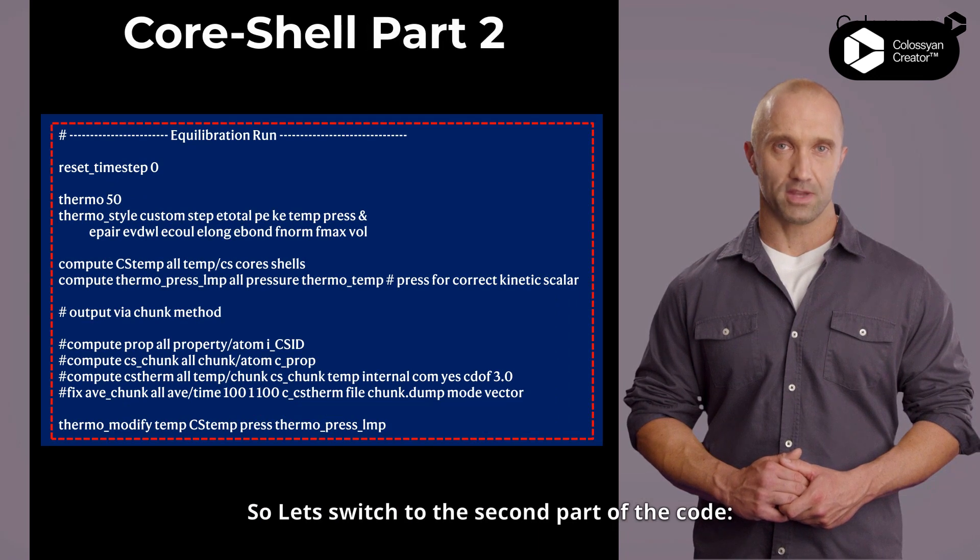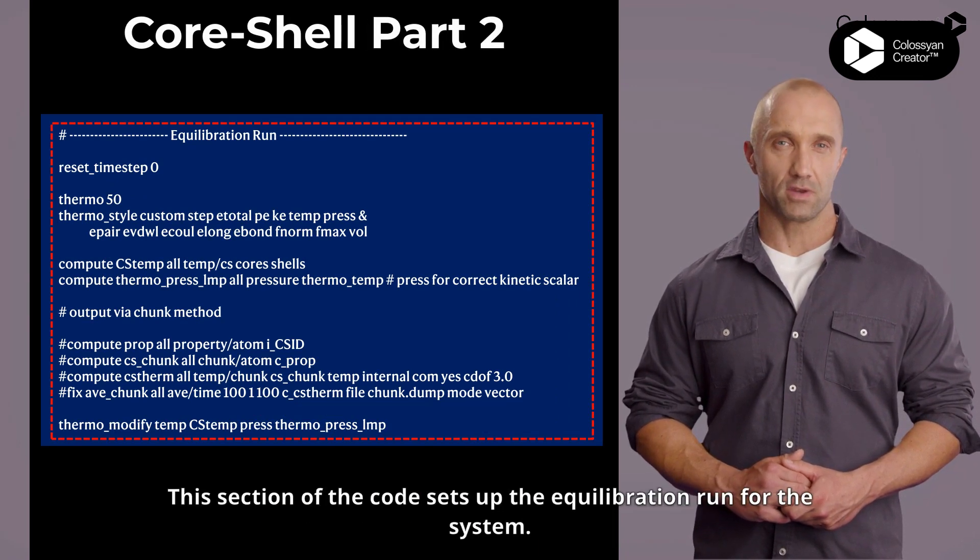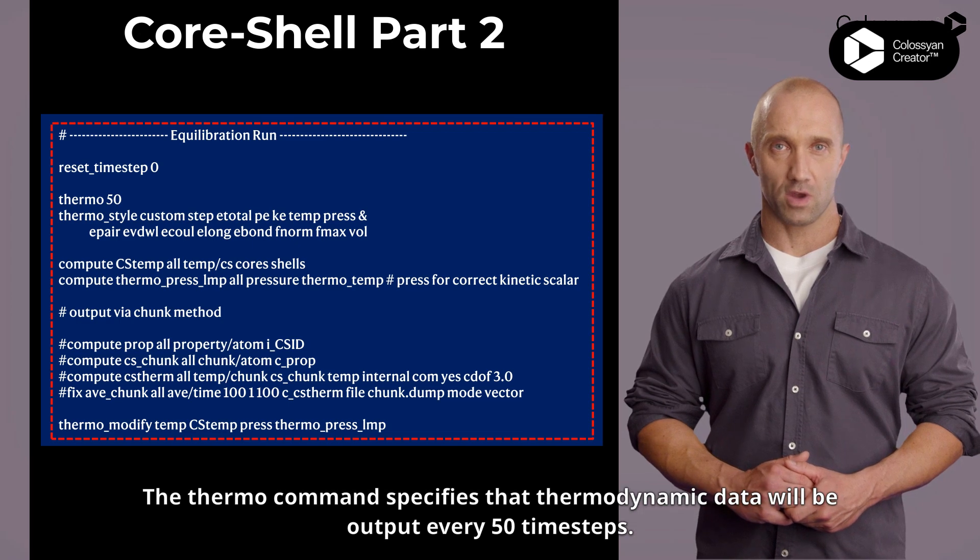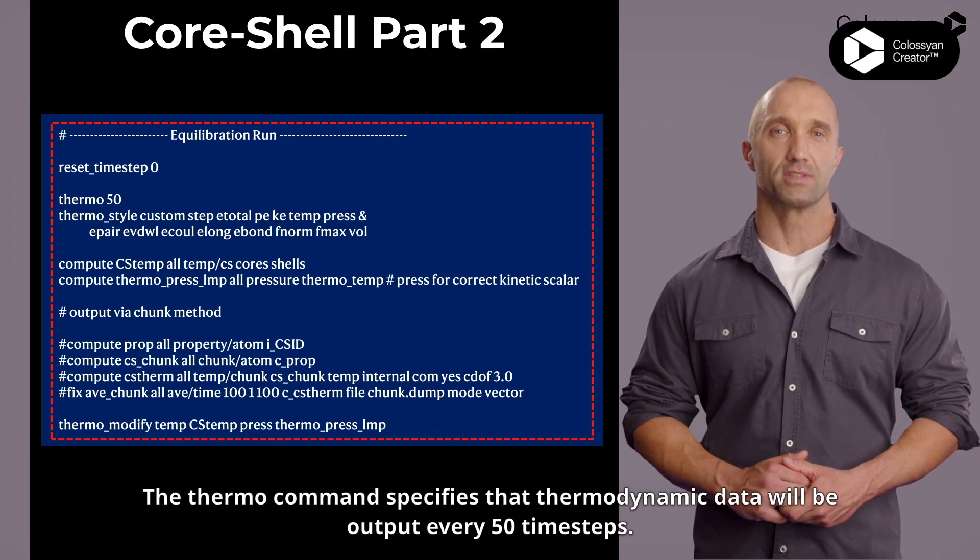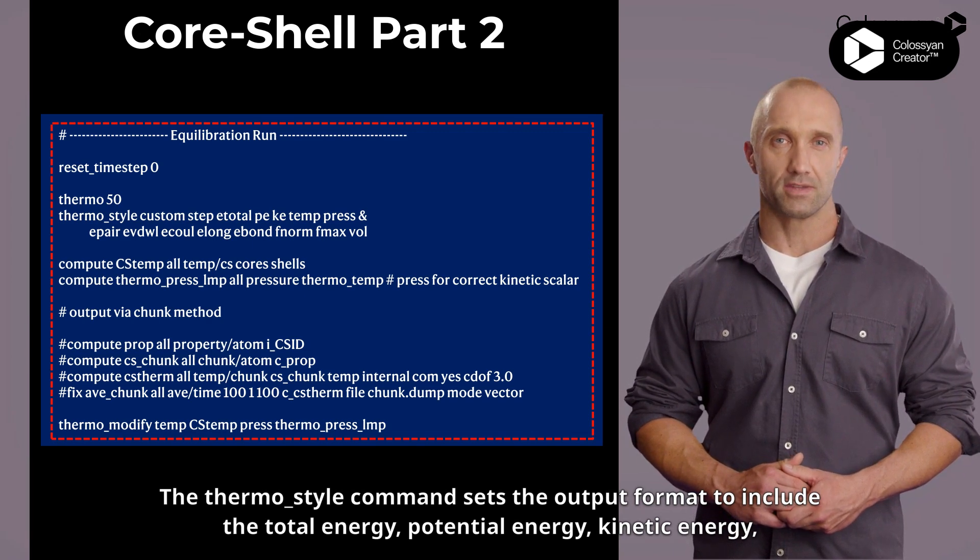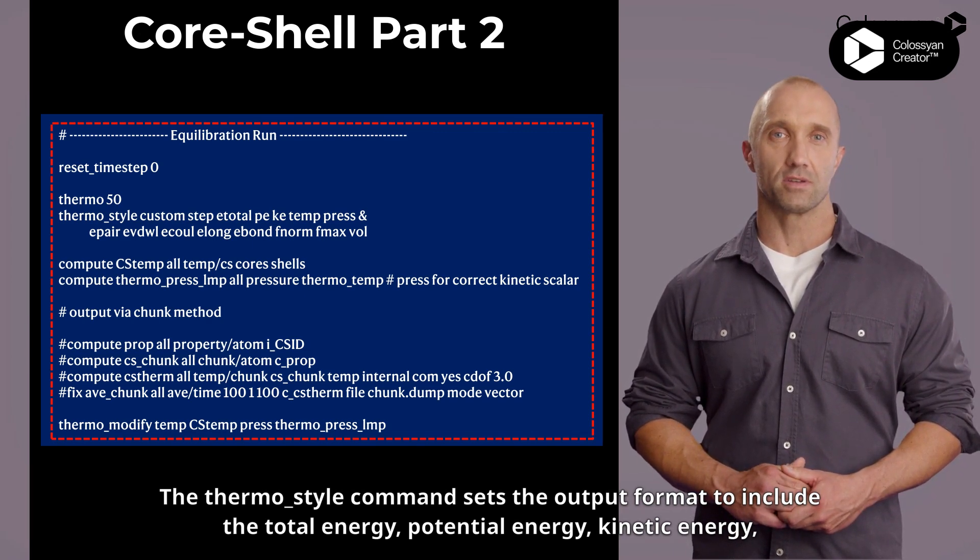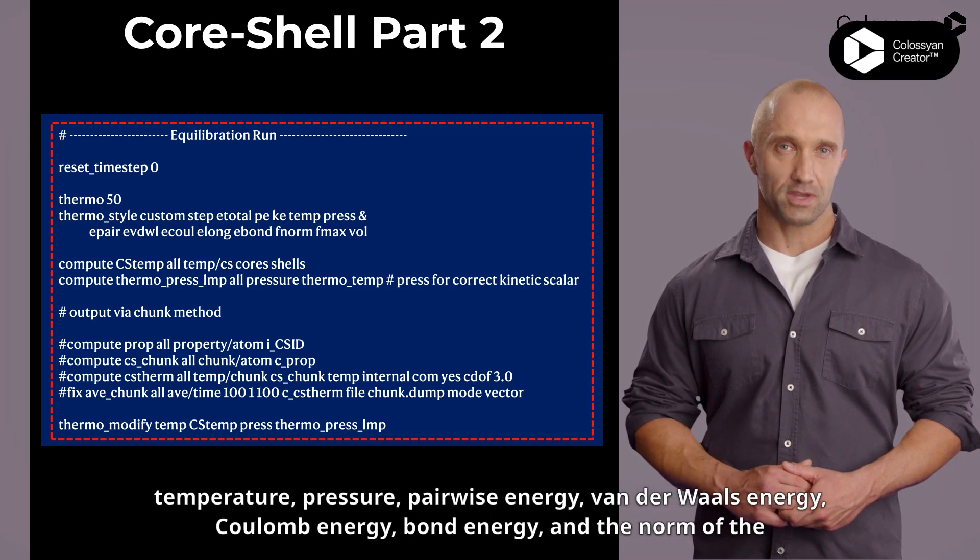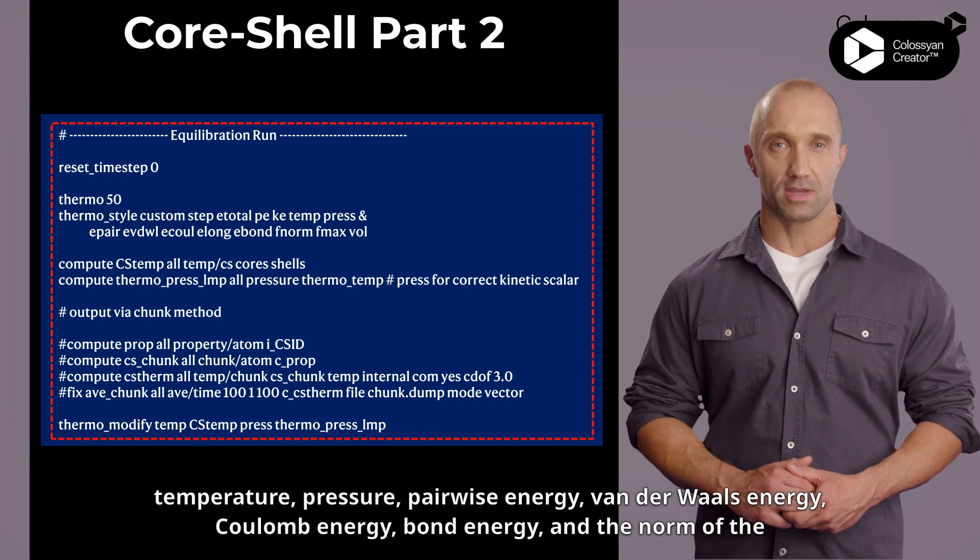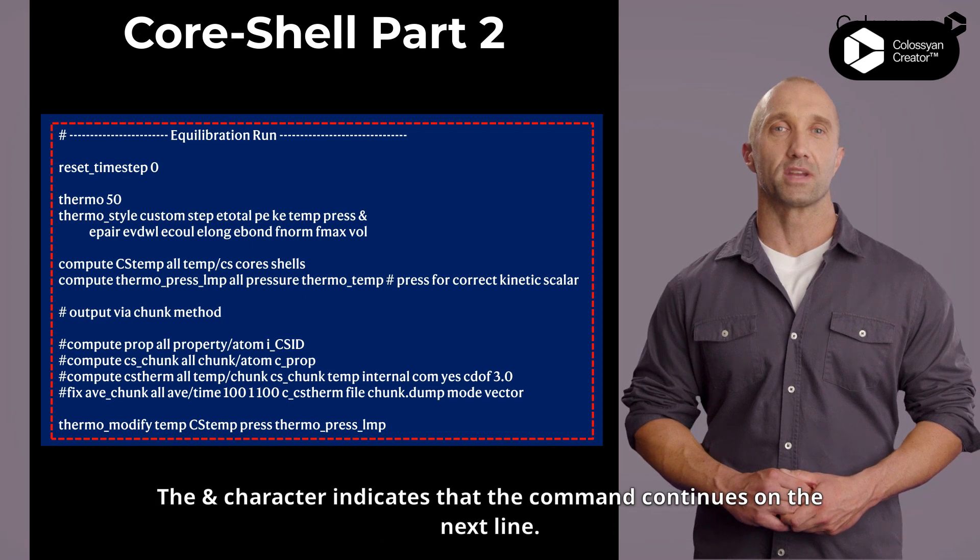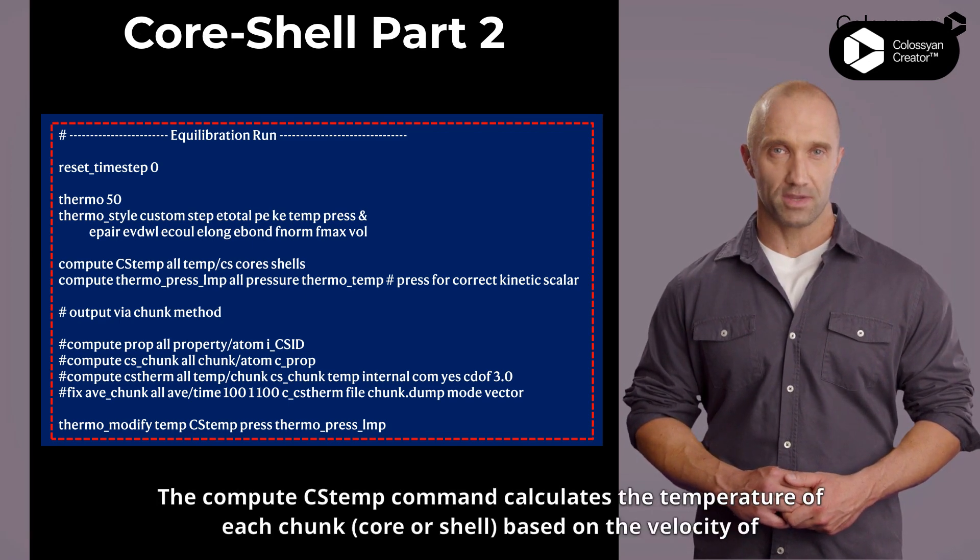Let's switch to the second part of the code. This section of the code sets up the equilibration run for the system. The reset_timestep command resets the global timestep to zero. The thermo command specifies that thermodynamic data will be output every 50 timesteps. The thermo_style command sets the output format to include the total energy, potential energy, kinetic energy, temperature, pressure, pairwise energy, van der Waals energy, Coulomb energy, bond energy, and the norm of the force vector and maximum force vector. The backslash character indicates that the command continues on the next line.